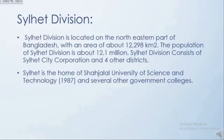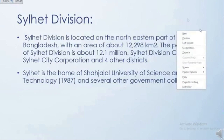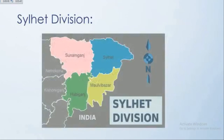Next one is Sylhet division. Sylhet division is located in the north-eastern part of Bangladesh, with an area of about 12,298 square kilometres. The population of Sylhet division is about 12.1 million. Sylhet division consists of Sylhet city corporation and four other districts. Sylhet is the home of Shahjalal University of Science and Technology and several other government colleges. Also, the famous shrine of Shahjalal is situated in Sylhet division. This is the map of Sylhet division.